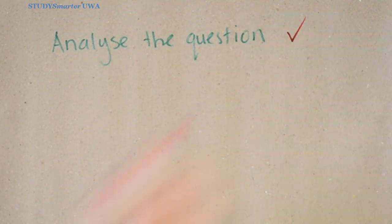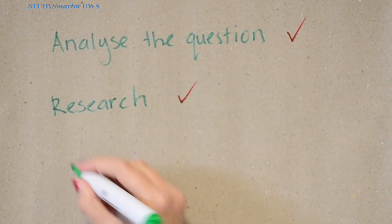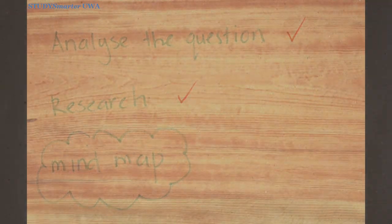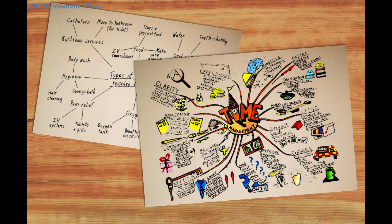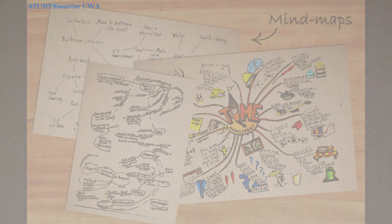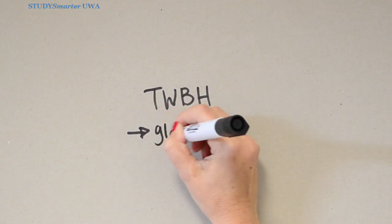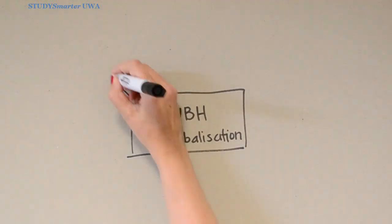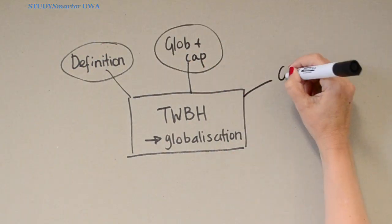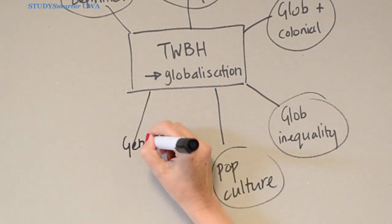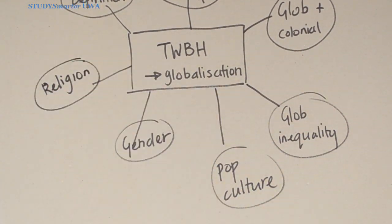Now you've analyzed the question and done some thinking about it, it's useful to create a mind map. A mind map is a visual summary of all your ideas about a topic. Start by writing the topic in the centre of your page, then add in key ideas — in this case the lenses or issues raised in relation to globalisation.